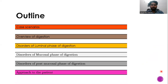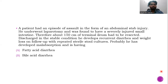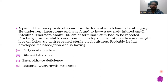Before going further I would like to show you a few case scenarios. Case scenario 1: A patient had an episode of assault in the form of an abdominal stab injury. He underwent laparotomy and was found to have a severely injured small intestine. Therefore, about 150 cm of terminal ileum had to be resected. Discharged in stable condition, he develops recurrent diarrhea and weight loss on follow-up with repeated sterile stool cultures. He has probably developed malabsorption — is it A) fatty acid diarrhea, B) bile acid diarrhea, C) enterokinase deficiency, or D) bacterial overgrowth syndrome?